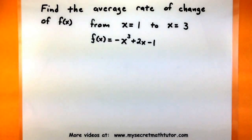Let's do another problem involving the average rate of change of a function. For this one, we'll use the function -x³ + 2x - 1, and we're interested in its average rate of change between x = 1 and x = 3.